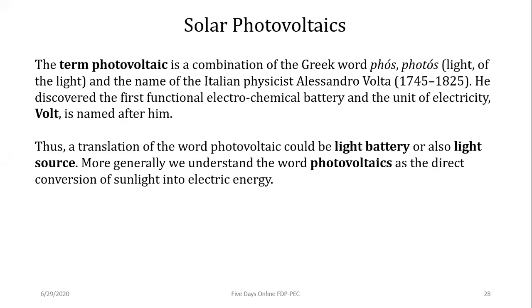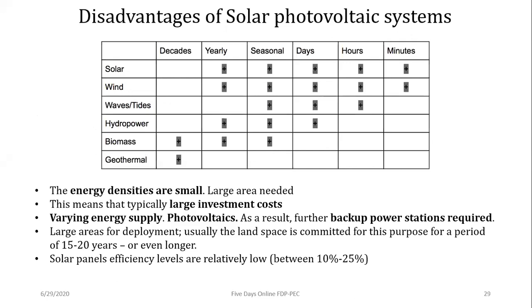Photovoltaics means light to electricity conversion. Solar energy systems vary seasonally, daily, and even second by second. Geothermal and biomass systems have only seasonal variation. We will cover solar, wind, biomass, and geothermal systems in this lecture. The intermittent and variable nature of solar energy is one of its key disadvantages.